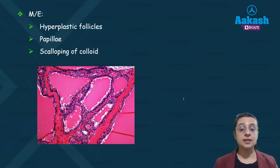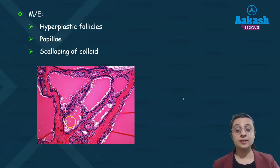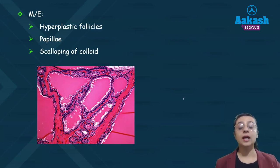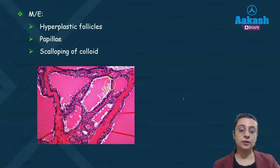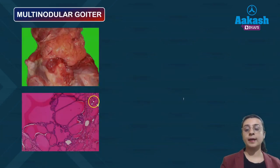Microscopically in Graves disease, you will see hyperplastic follicles, papillae-like formations — distinguished from papillary carcinoma by the absence of nuclear features of malignancy — and scalloping of colloid, appearing as whitish spaces where the colloid recedes from the epithelial lining. These three features: hyperplastic follicles, papillary formation, and scalloping of colloid are key.